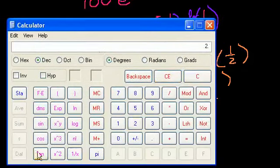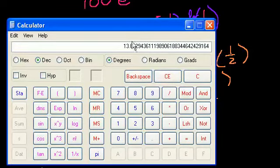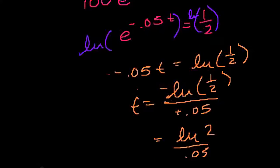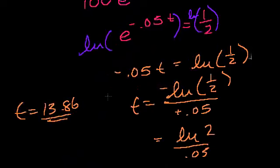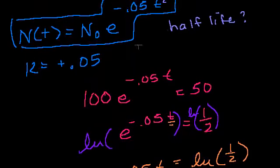So if I do 2 natural log divided by 0.05, it is equal to 13.86. So when t is equal to 13.86, and I'm assuming that we're dealing with time in years. That tends to be the convention. Although sometimes it could be something else, and you'd always have to convert to years.